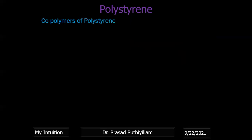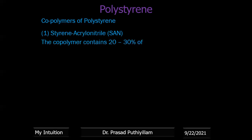Some important copolymers of polystyrene: A copolymer contains two different monomer units. The first is styrene-acrylonitrile, known as SAN. It is available as SAN and contains styrene as well as 20–30% acrylonitrile monomer. The acrylonitrile repeating unit is present alongside the polystyrene structure. SAN has improved impact strength and better chemical resistance compared to normal polystyrene.